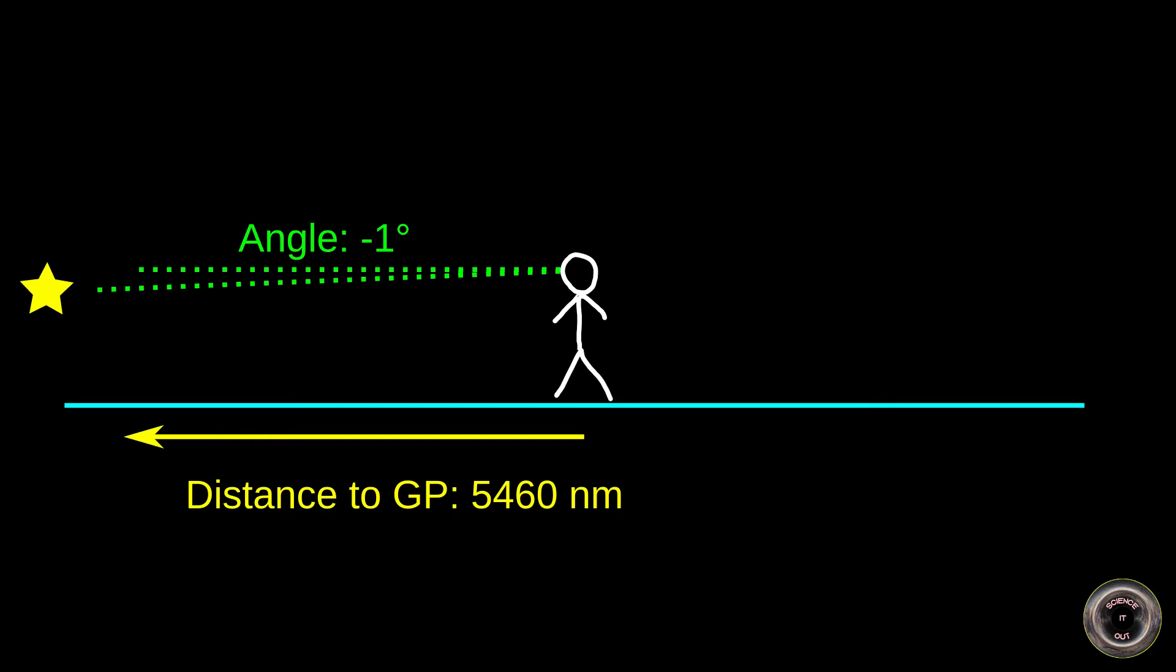And so we continue. 5,520 nautical miles, minus 2 degrees. 6,000 nautical miles, minus 10 degrees. 7,200 nautical miles, minus 30 degrees. 10,800 nautical miles from the GP, the elevation reaches minus 90 degrees, and so the star should be directly below us.